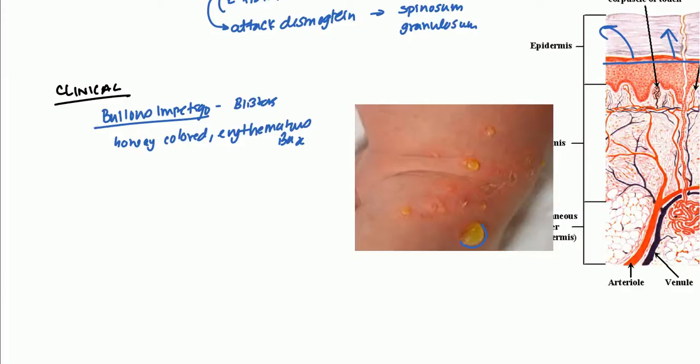However, this lesion can also be caused by strep pyogenes as well. So you have to kind of try to differentiate those two. Where is it primarily found? It's primarily going to be found in the exposed areas and orifices. So around the mouth and around the hands and feet in those areas.